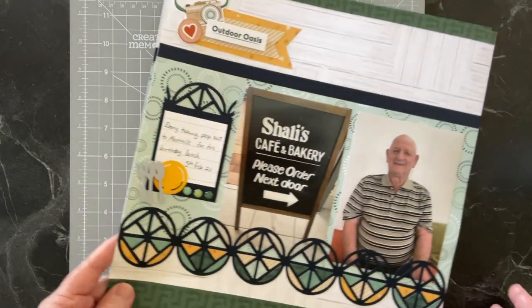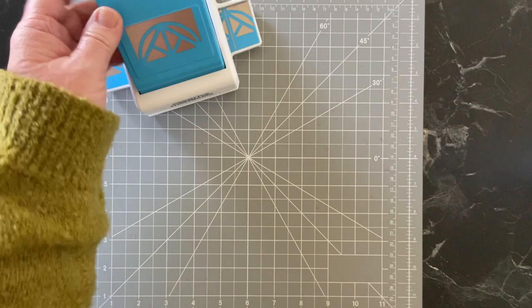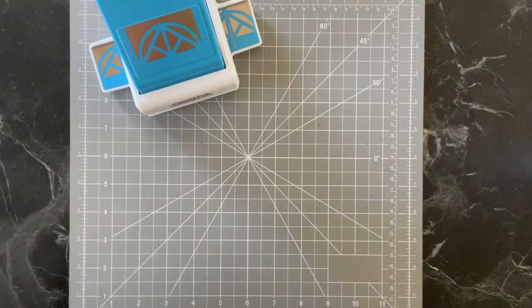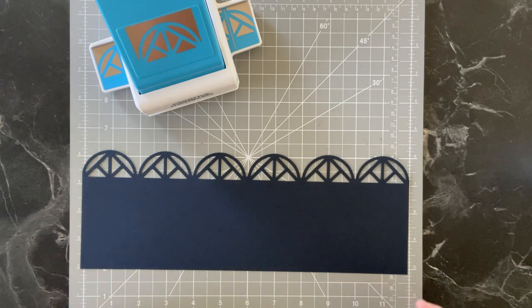So to begin to do that border I'm going to show you, we need your geometric frame punch and also a piece of cardstock. It can be a scrap piece of cardstock, doesn't have to be that wide.